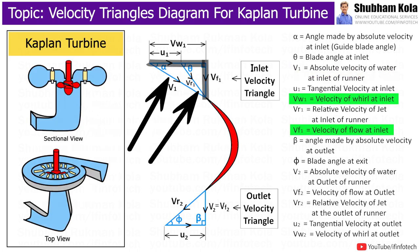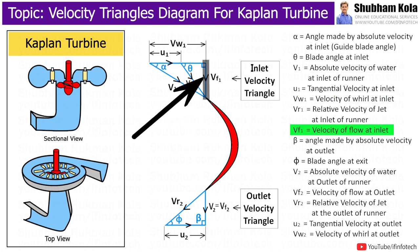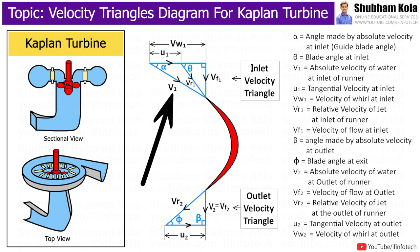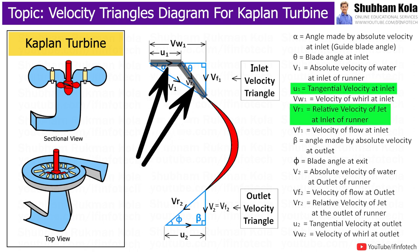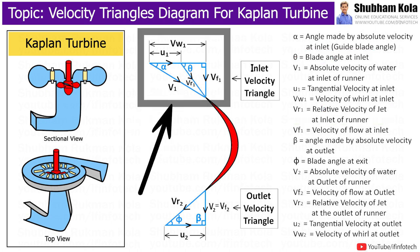This inclined line V1 is divided into two parts — one part is horizontal and another part is vertical. The horizontal part of V1 is known as the velocity of whirl Vw1, and the vertical part is indicated as Vf1, the velocity of flow. On this velocity rectangle, we add the velocity of blade U1 and the relative velocity Vr1 at blade angle θ with the horizontal, completing the inlet velocity triangle for Kaplan turbine.